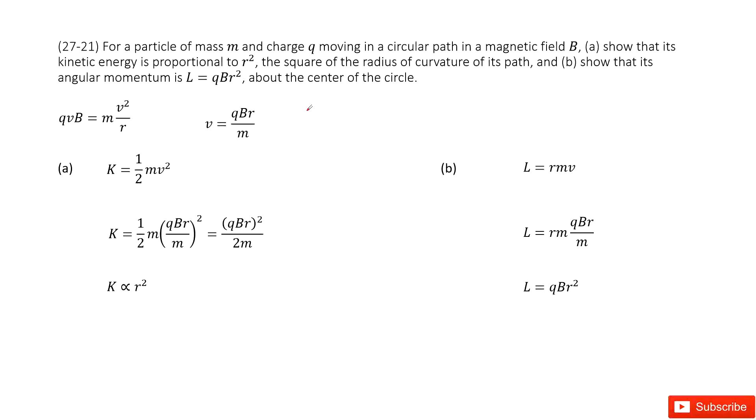Here we have a charged particle moving in the magnetic field. First, we need to show that the kinetic energy is proportional to r squared. So how can we do that? We can consider the charged particle moving in a magnetic field.